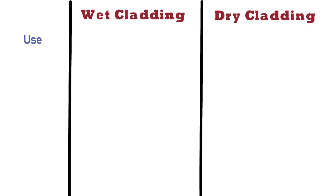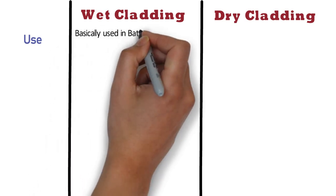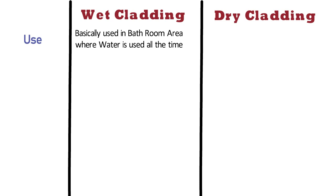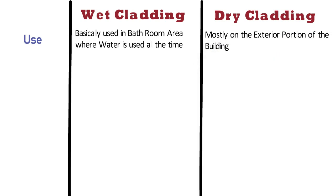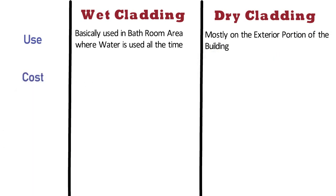Use: Wet wall cladding is basically used in bathroom areas where water is used all the time. Whereas dry stone cladding can be used mostly on the exterior portion of the building. The cost of wet cladding is less as compared to dry cladding, whereas dry cladding is an expensive method.